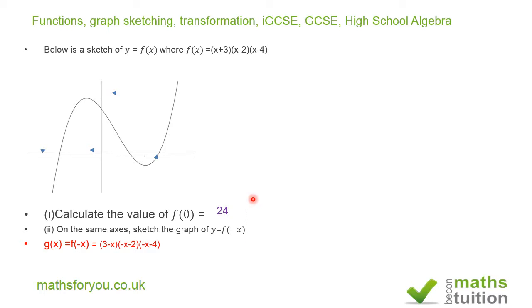So we change for f of x, in order to get g of x, we change all the x values to minus x there, minus x there which gives minus x minus 2, and minus x there which was minus x minus 4. That's what we've got here.